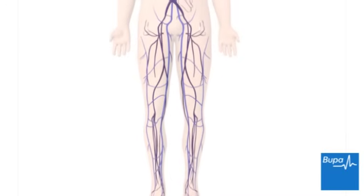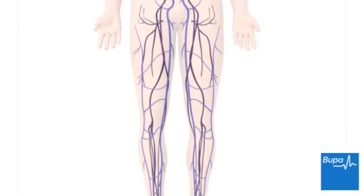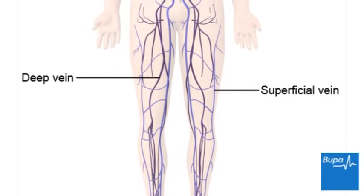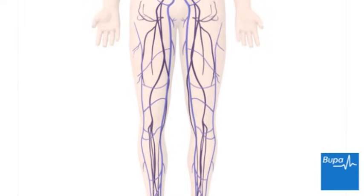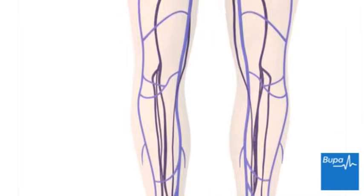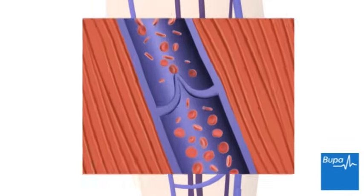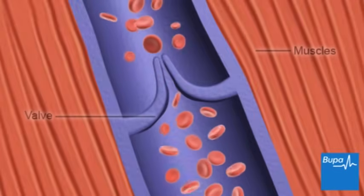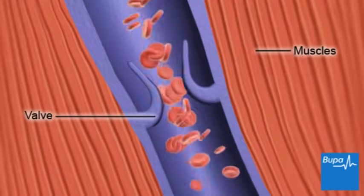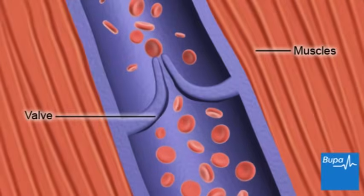The deep veins pass through the deep tissues of the leg. They transport blood from the legs and feet back up to the heart. The superficial veins lie below the surface of the skin. Here we show the position of the leg veins. The deep veins run between muscles of the leg. Contractions of these muscles, when we move our leg and ankle, help to squeeze the blood back up towards the heart.